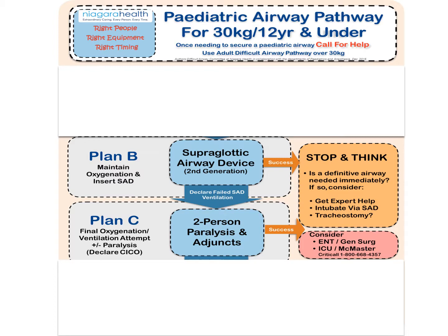It's very important that if you are able to oxygenate your patient successfully with the supraglottic airway device, you need to stop and think about whether a definitive airway is required immediately. This involves the use of expert help — anesthesia, ENT, or pediatrics. You'll notice the algorithm says to intubate via the supraglottic airway device; however, you are not expected to do this yourself, as pediatric bronchoscopes aren't readily available. That may be an option employed by anesthesia or ENT accessing a specific pediatric scope. Your focus at that point is oxygenating the patient and getting early, definitive expert help.